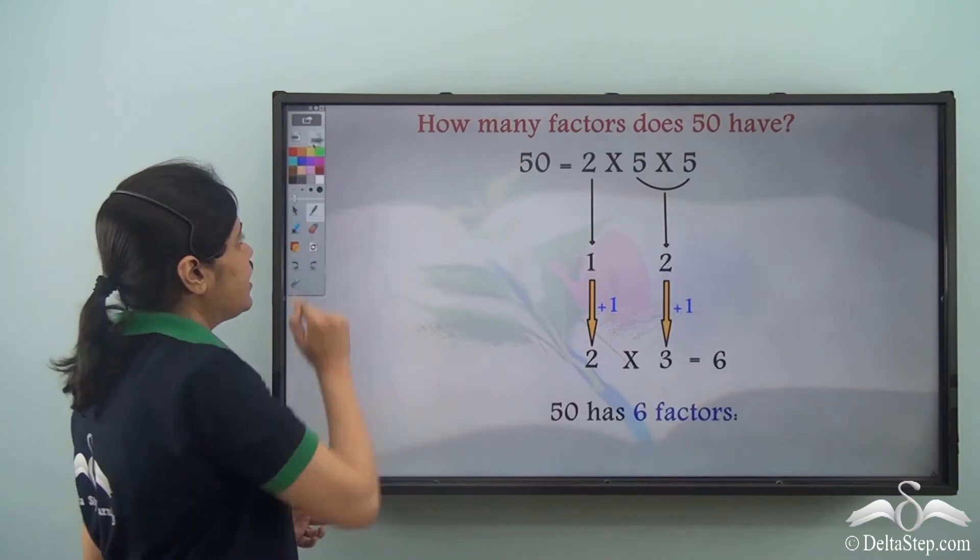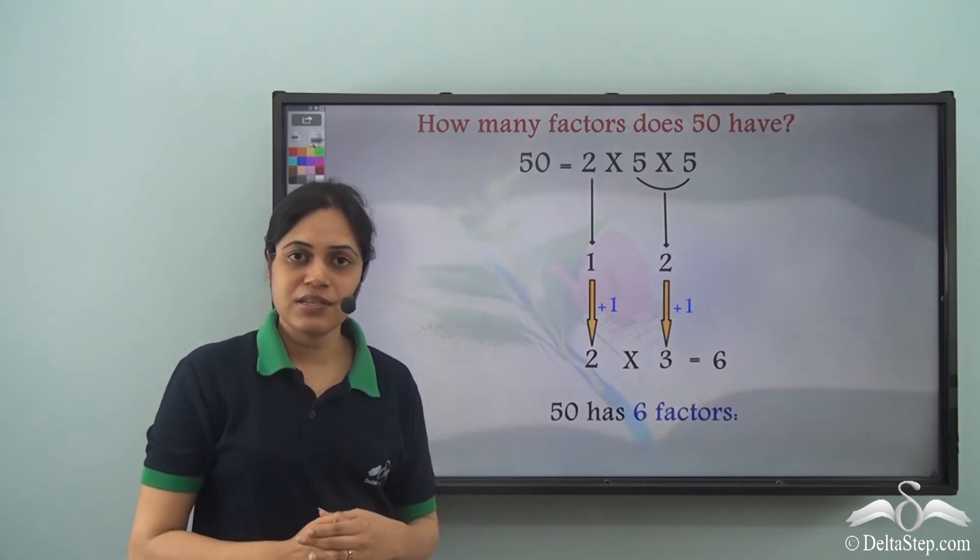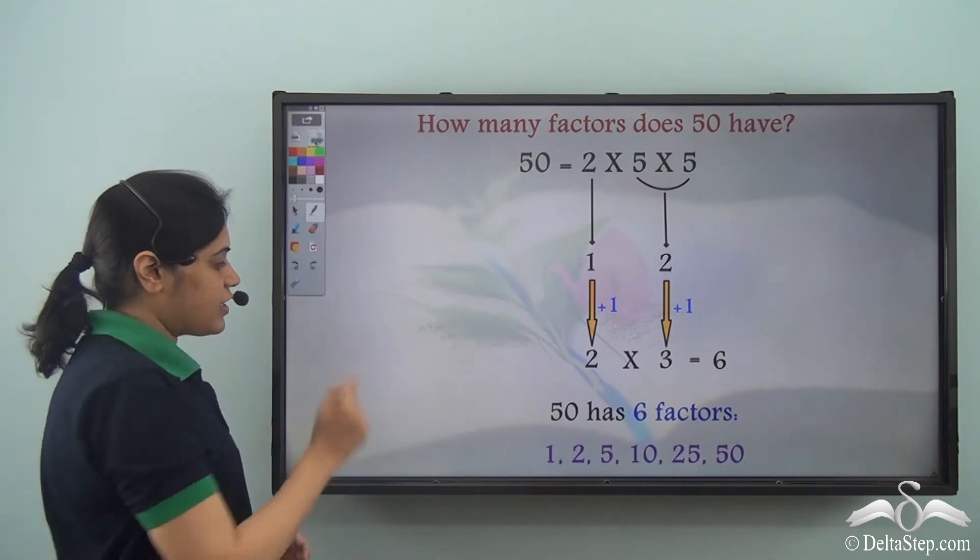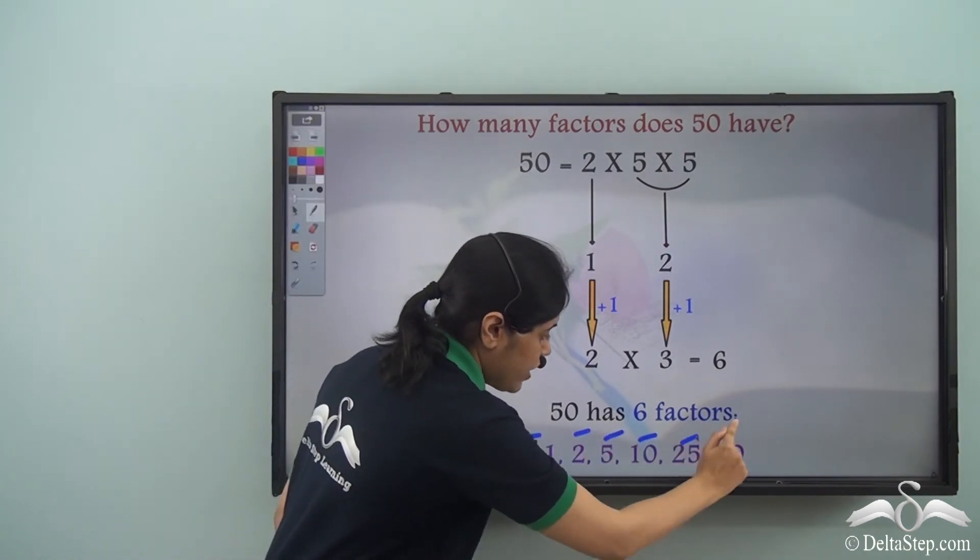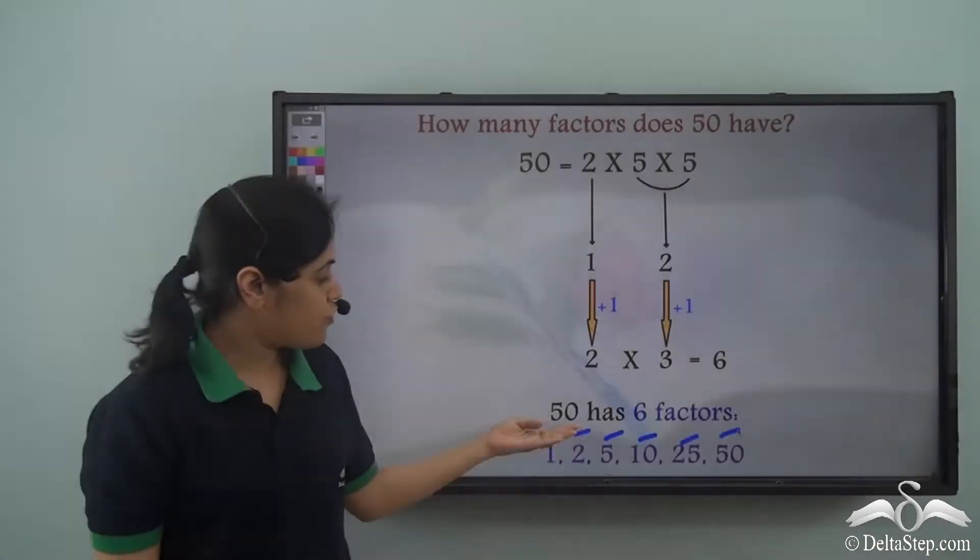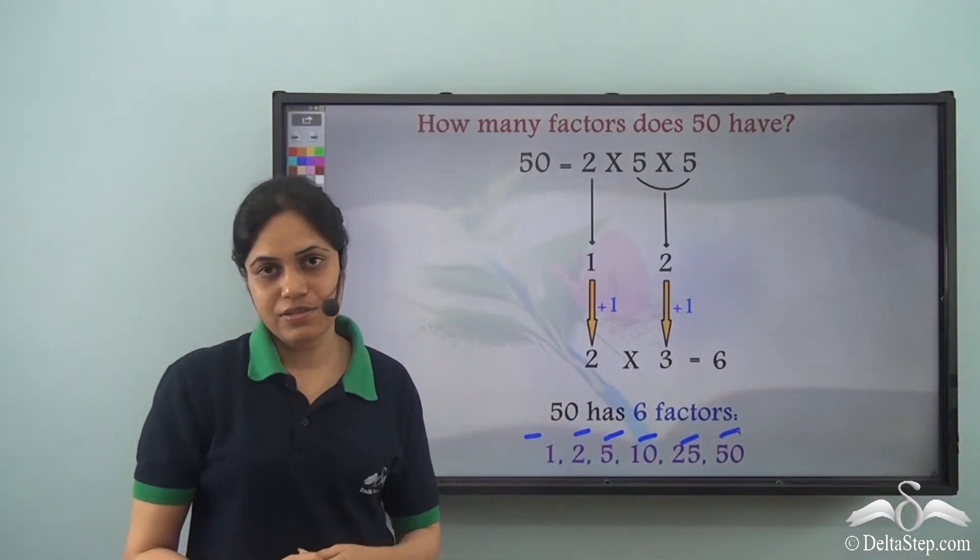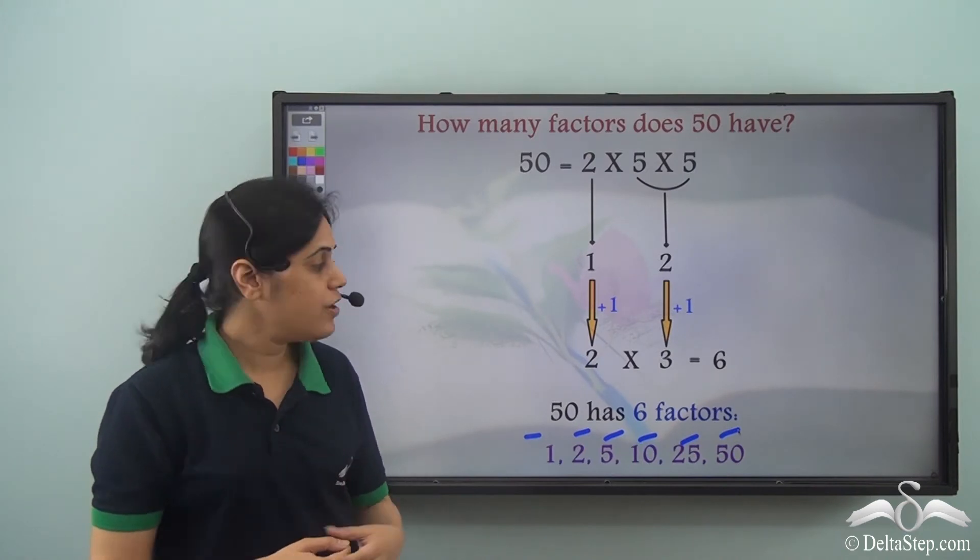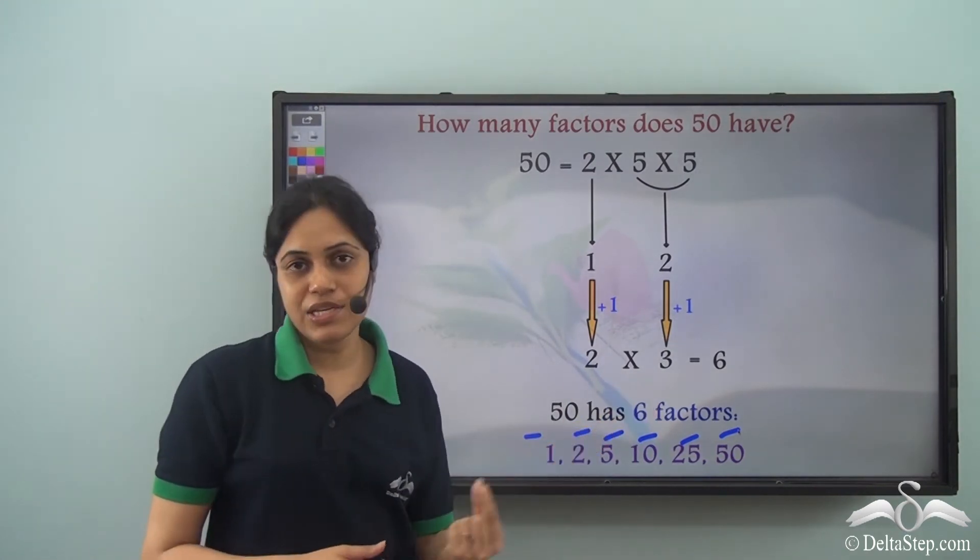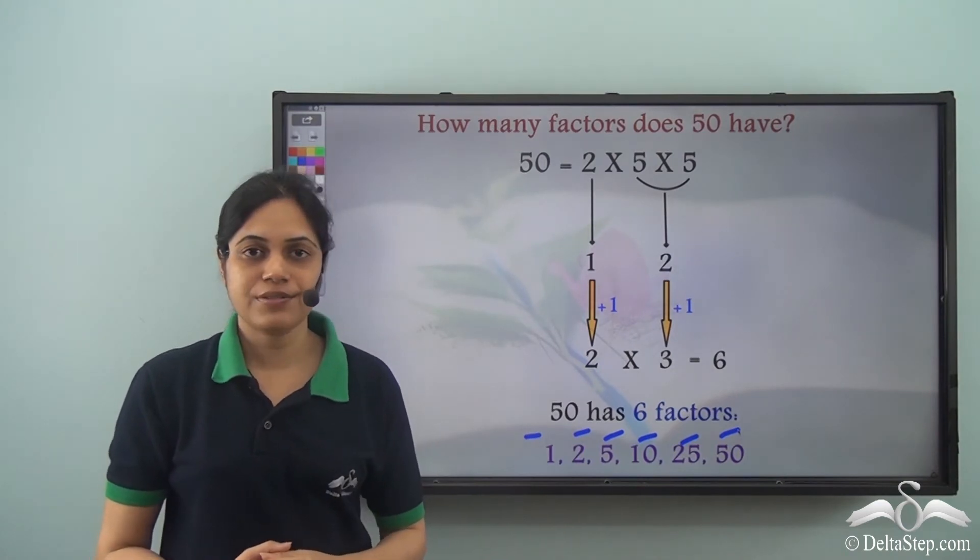So 50 has 6 factors which we have already seen. The 6 factors of 50 are 1, 2, 5, 10, 25, and 50. So 50 has 6 factors. So now once you find the factors of a number, you can cross-check using this whether you have actually found all the factors.